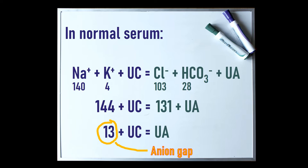The normal anion gap is between 12 and 16. Remember this by thinking of it as a crap number plate.